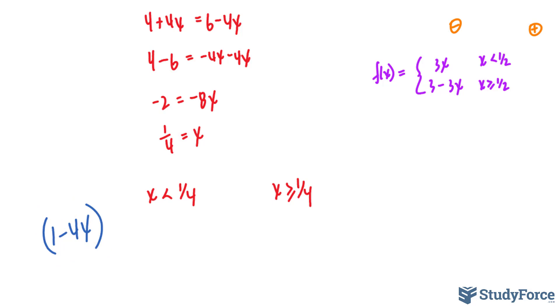So when we pick a value that's, let's say, 0, we get 1 minus 4 times 0, which is a positive output. And when we pick a value that's greater than a quarter, we get a negative output, and you can verify that with your calculator.